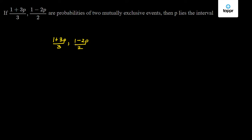For both probabilities to be valid (mutually exclusive), we can write 0 ≤ (1 + 3p)/3 ≤ 1. Similarly, we can write 0 ≤ (1 - 2p)/2 ≤ 1.